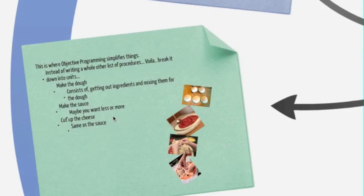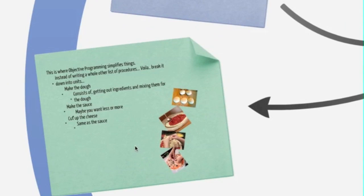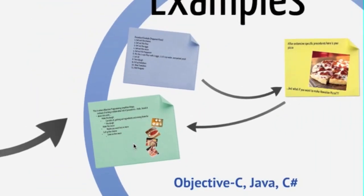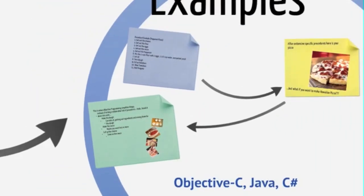Making the dough consists of getting out ingredients and mixing them. What if you want whole wheat dough? You use the same unit called 'make the dough.' Maybe you want the sauce less sweet or more sweet - you use that unit of making the sauce and change some variables instead of rewriting the whole code. Same with cutting up the cheese - you modify that unit.